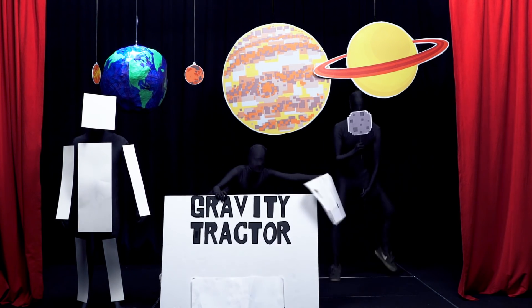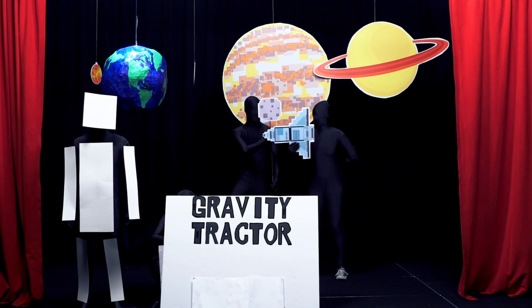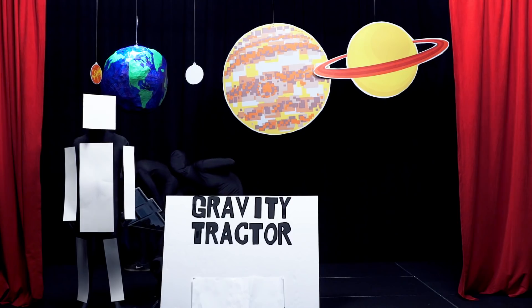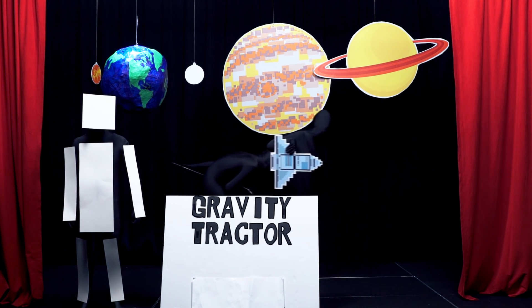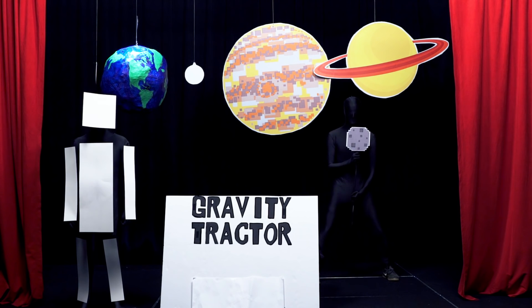The first is the gravity tractor approach. A spacecraft would fly up to an asteroid and set up shop right beside it. After a few years, the presence of a nearby object would alter the gravity of the asteroid, shifting its trajectory and rerouting it away from Earth. We wouldn't even need to touch it.